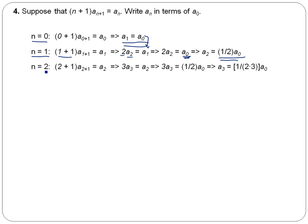And then, n equals 2 gives us 2 plus 1, a subscript 2 plus 1 is equal to a_2. That gives you 3a_3 is equal to a_2. And from this previous expression, we know that a_2 is 1 half a_0. And to solve for a_3, you'd want to divide by 3. And that puts a 3 in the denominator along with the 2. So, you get a_3 is 1 over 2 times 3 times a_0.